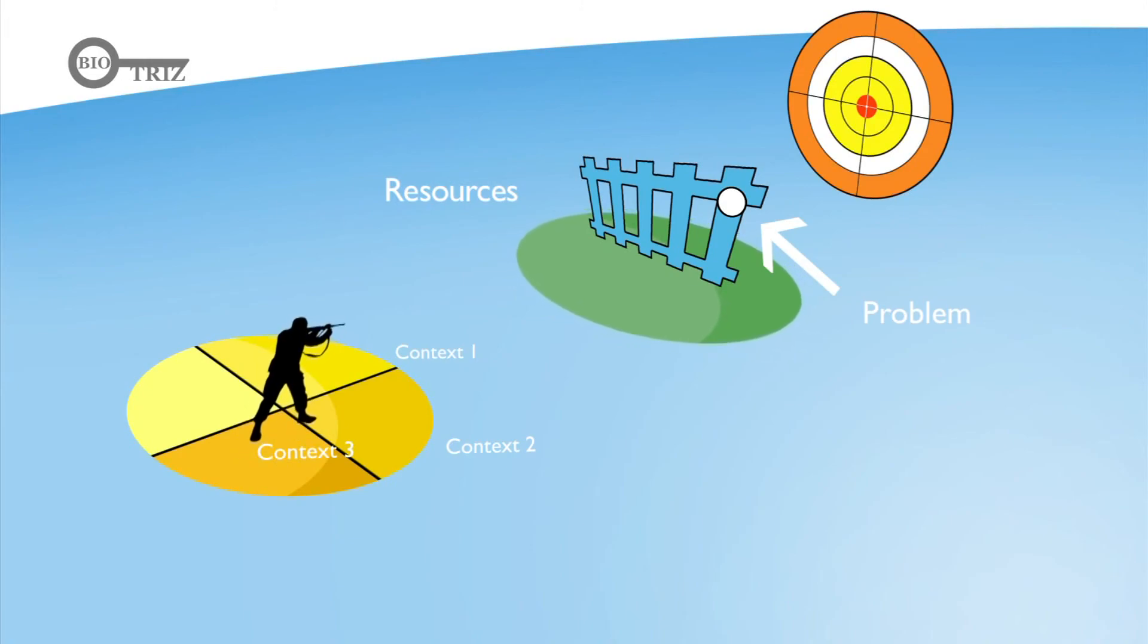The resources for change are the properties of objects that are included in your problem area. Just like the heaviness of the hammer helps us to hit the nail into the wall. Even the object that causes a problem can be used as a resource.